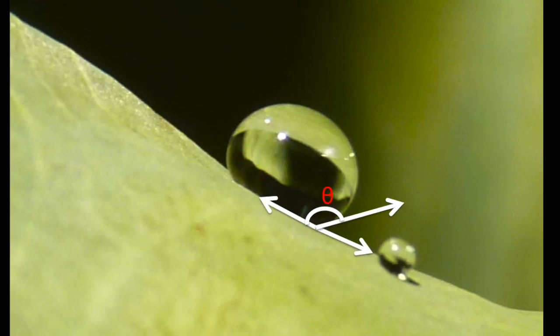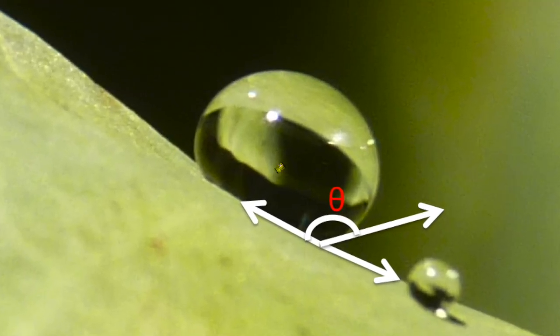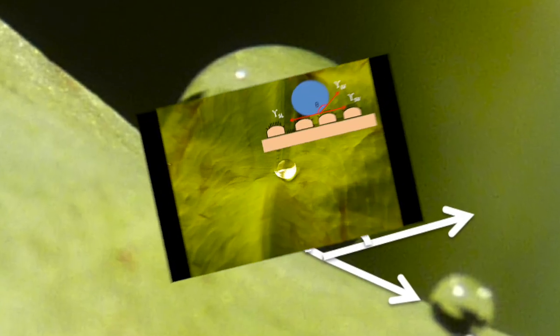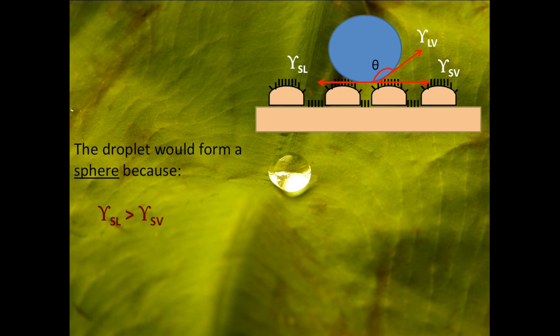Such a surface would have a high contact angle with the liquid droplet. This is because of the low surface energy of the leaf, leading to a sphere formation of the water droplets, which minimizes the area of contact between the leaf and the water droplet and will eventually result in a high contact angle.